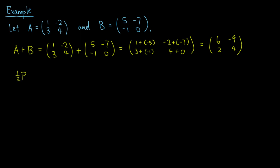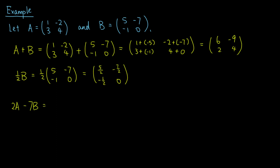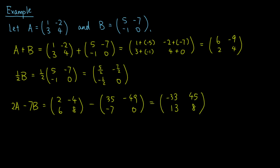Also, 1 half times B is equal to 1 half times the matrix with entries 5, negative 7, negative 1, and 0. We can also mix matrix addition or subtraction with scalar multiplication. For example, 2A minus 7B equals the matrix with entries 2, negative 4, 6, 8, minus the matrix with entries 35, negative 49, negative 7, and 0, which is equal to the matrix with entries negative 33, 45, 13, and 8.